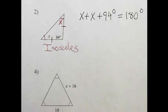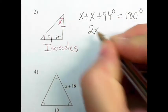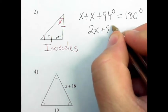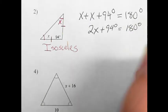Let's think about that for a second. If I have an x and then I take another x, I'll have two x's plus 94 degrees, and that should add up to 180 degrees.